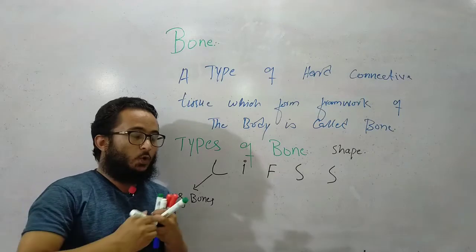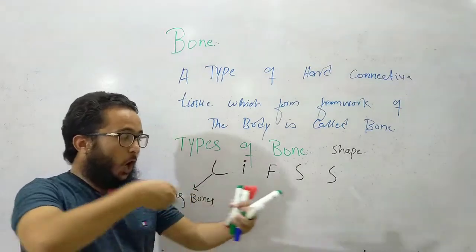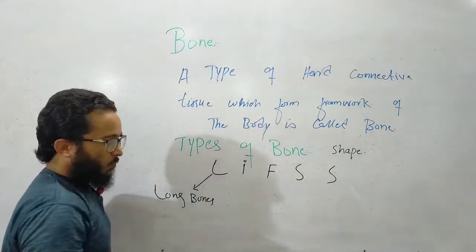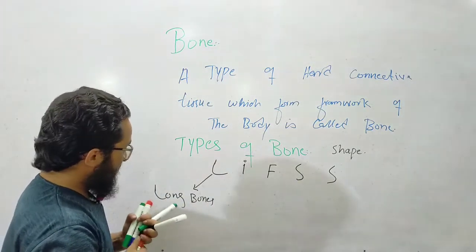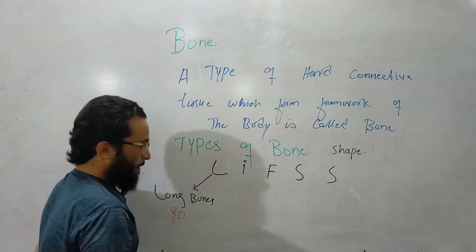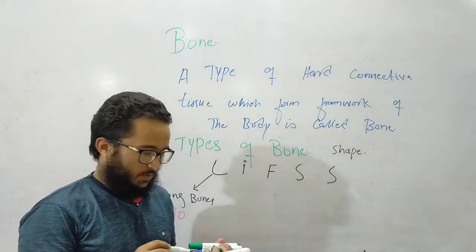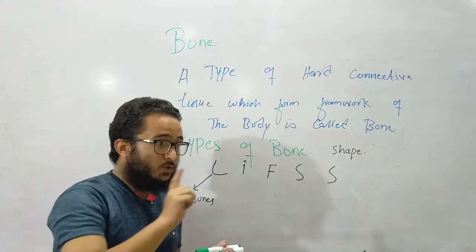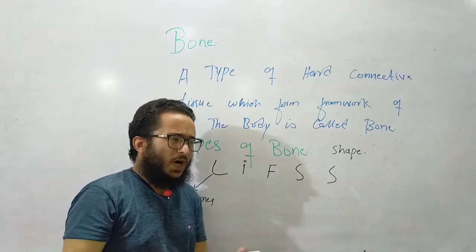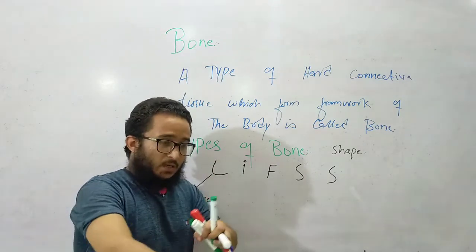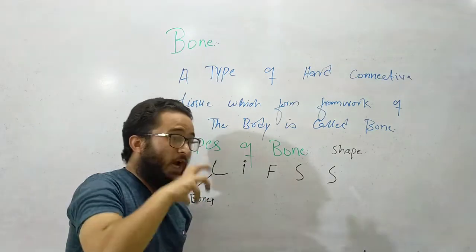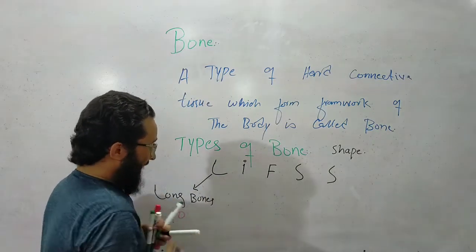Long bones have a long size with a thin shaft. These are long bones. For example, the humerus, radius, ulna, femur bones, and phalanges. These are long bones, ninety bones which are long bones.